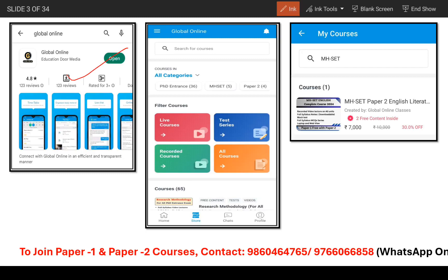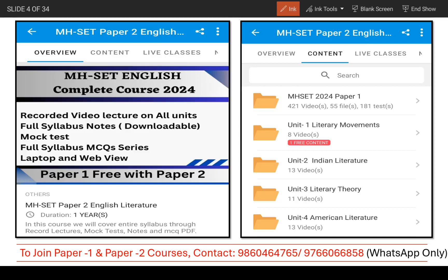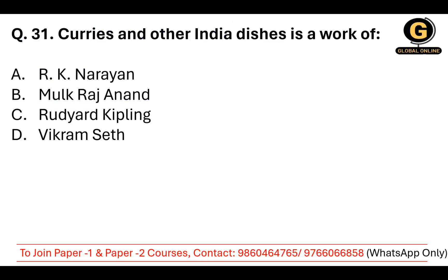If you want to watch free videos, first download the Global Online app. Once you are in, head to the store section — there you'll find details of all the courses. Use the search bar to directly type in the course name and you'll see an overview along with fees and duration. Click on the content section and you will find unit-wise folders. In each unit you'll get theory lectures, evaluation notes, mock tests, and MCQs. No need for extra reading. If you join the paid course, you'll also be added to a WhatsApp group where you'll receive PDFs for each session along with video links.